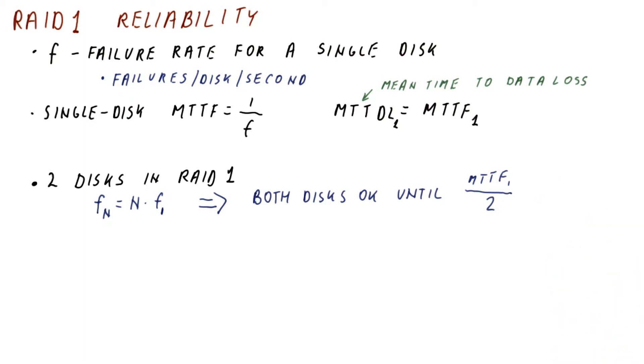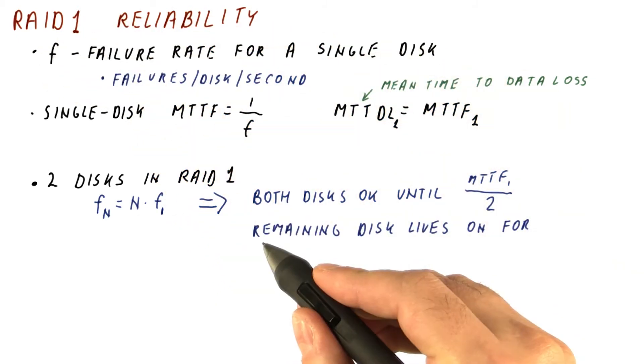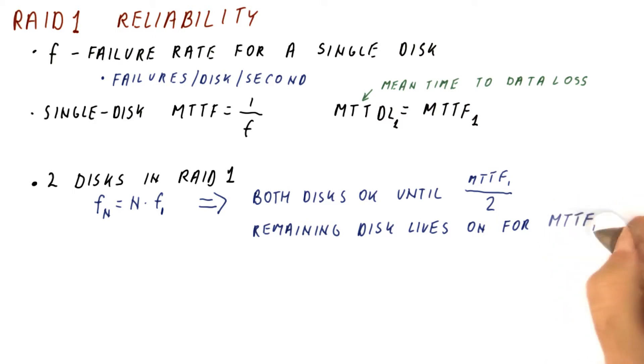But at this time, we are down to one disk. That one disk is a working disk and has this failure rate. So that one remaining disk will live on for another MTTF of a single disk.